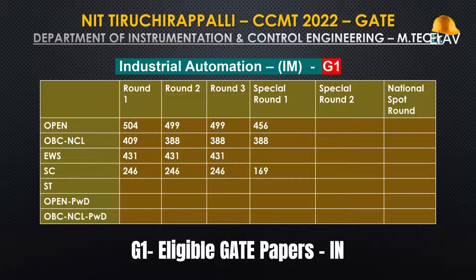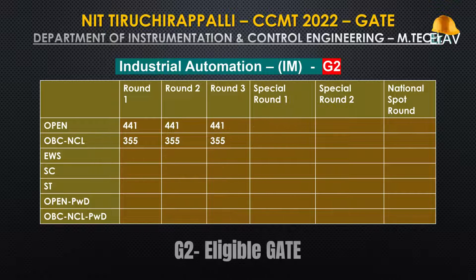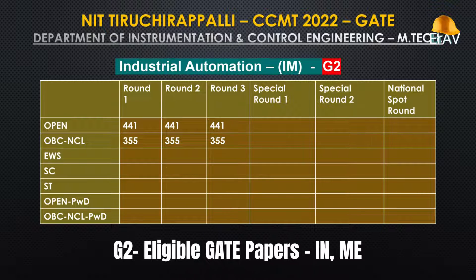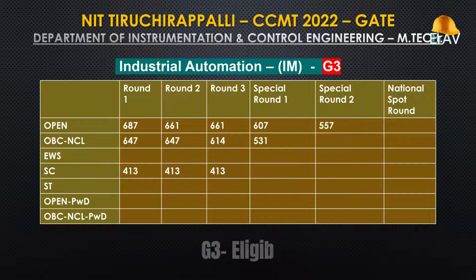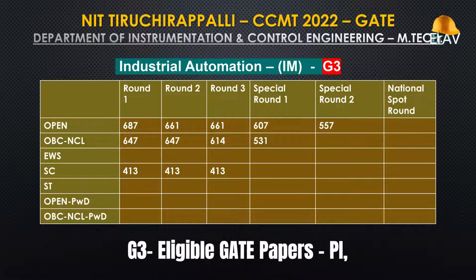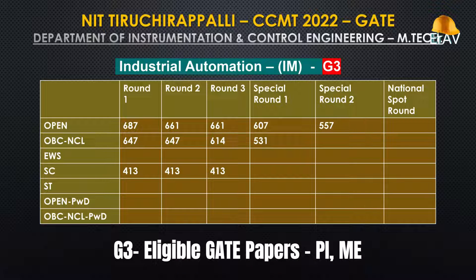Industrial Automation — Group 1: Eligible GATE Papers: IM. Group 2: Eligible GATE Papers: ME. Group 3: Eligible GATE Papers: PI, ME.